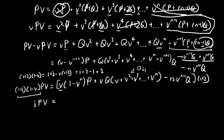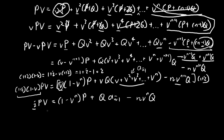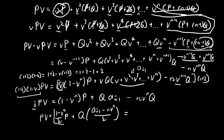By the same logic, multiplying by (1+i) reduces the powers of V on the right-hand side by 1. We get (1 minus V^N)·P plus Q·(a-angle-N minus N·V^N). Dividing through by i, and recognizing the annuity-immediate notation, the present value formula becomes: P·a-angle-N plus Q·(a-angle-N minus N·V^N) divided by i.